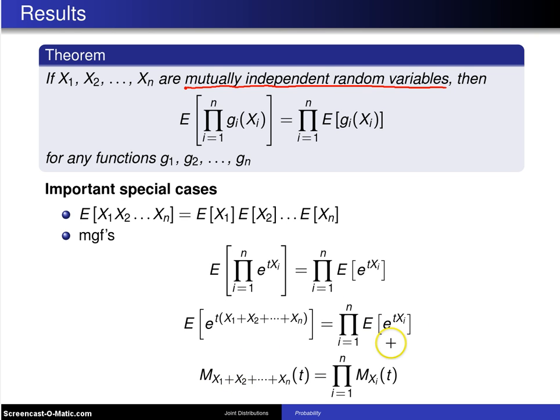On the right, this is the product of the marginal moment generating functions. This particular result will be used quite a bit in section 7.3 at the end of the next chapter.